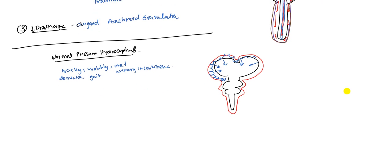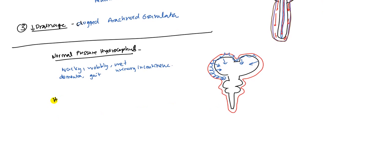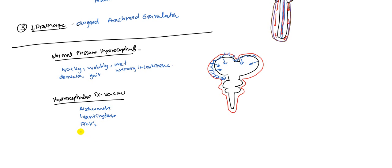Finally, we have hydrocephalus ex vacuo — and this is actually not even a true hydrocephalus. What happens is there is atrophy of the brain, so the brain actually becomes smaller, and to take up that extra space more CSF is produced. Anything can cause atrophy: Alzheimer's, Huntington's, Pick's disease, HIV. And for some reason not completely understood, pseudotumor cerebri also causes this type of brain atrophy which gives the appearance of hydrocephalus. So that's the topic of hydrocephalus — hope you guys learned a lot.